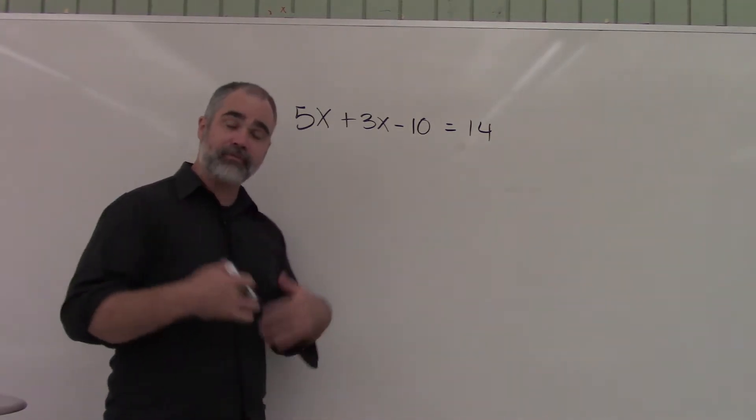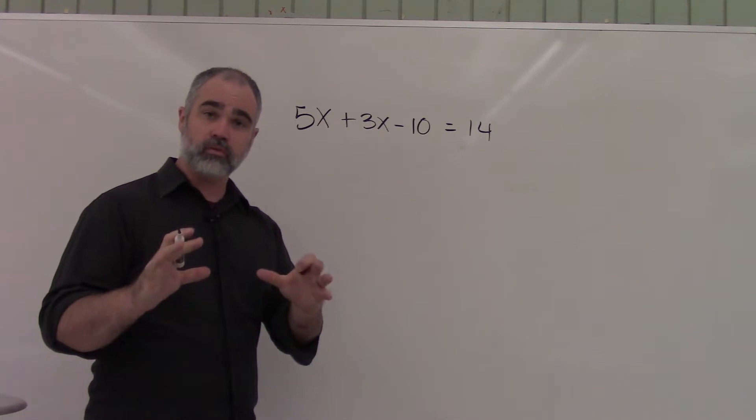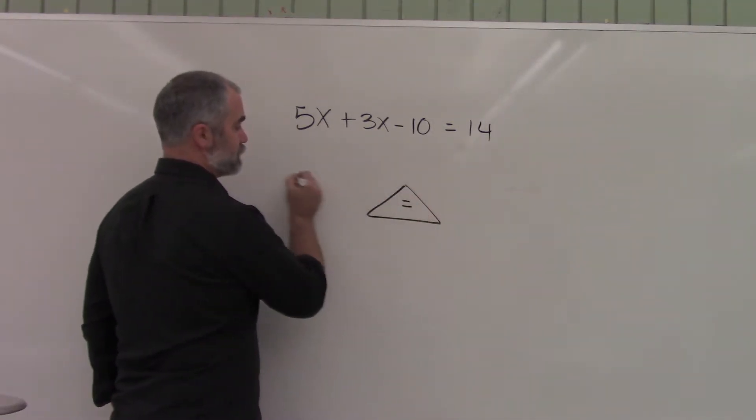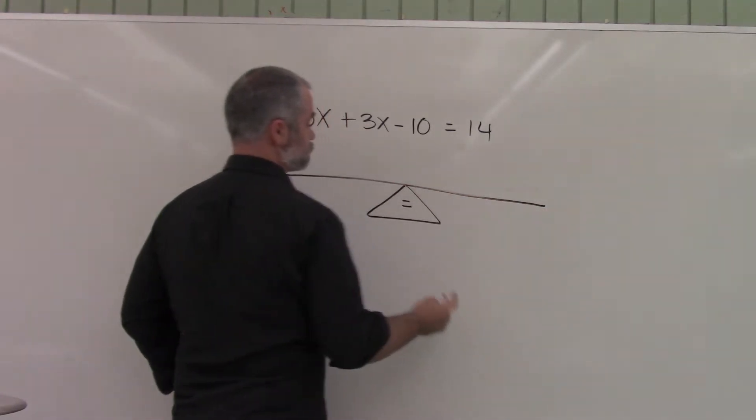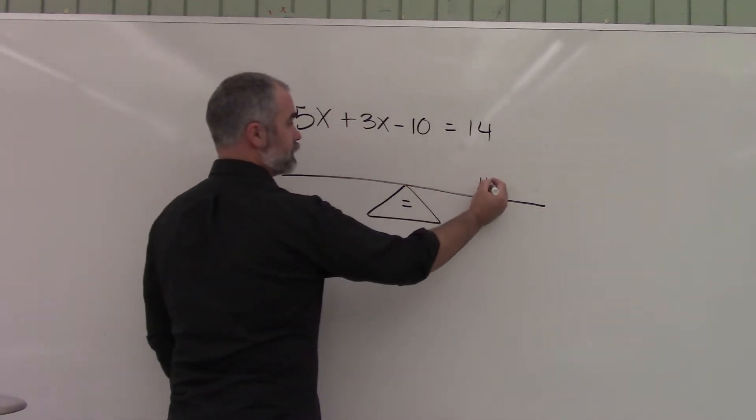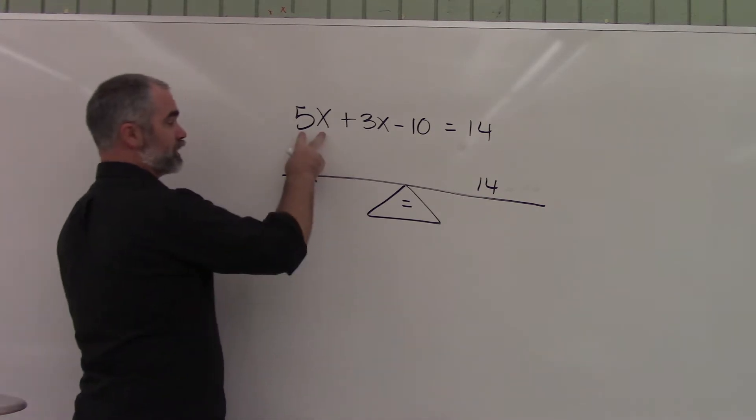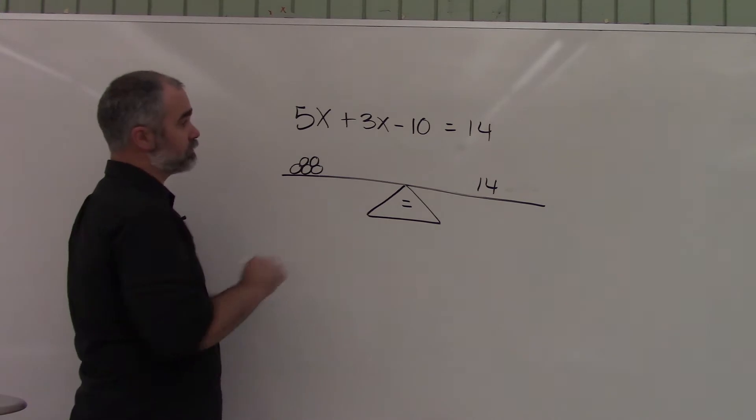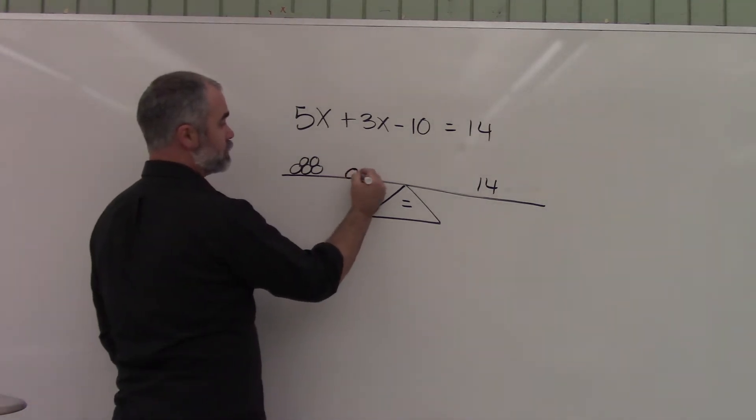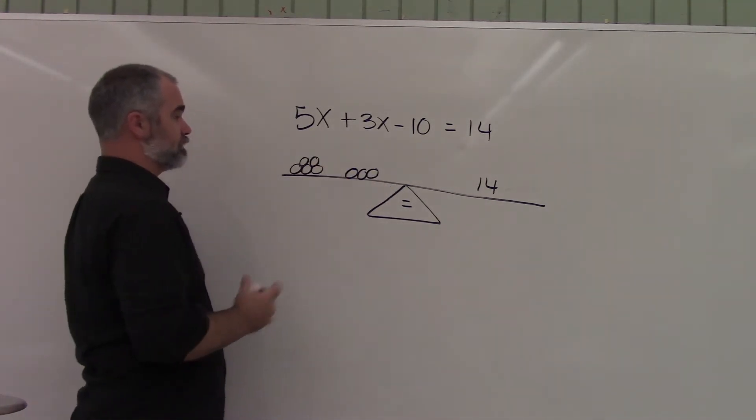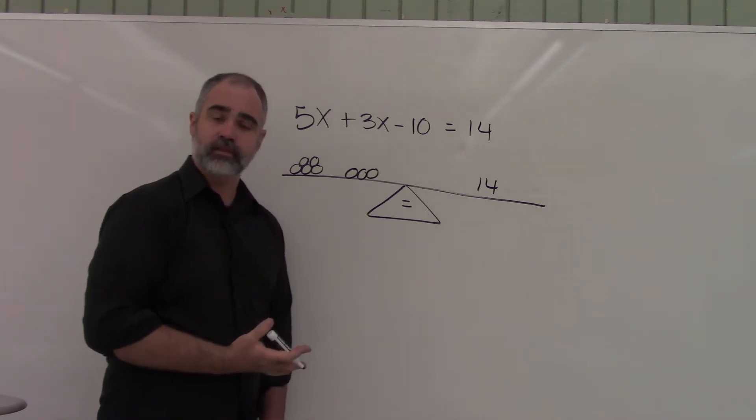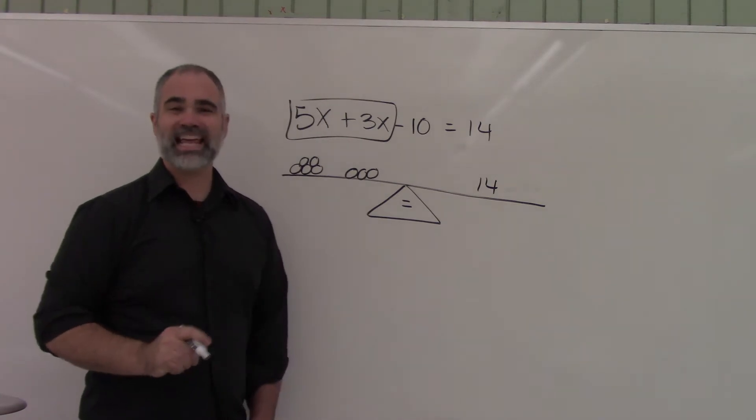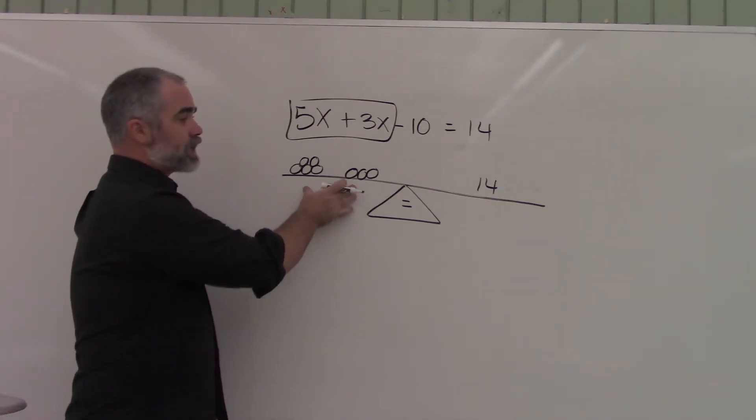The truth is, you can think about this like, remember from earlier in our episodes, we thought about this as a balance beam. Right, so I've got 14 things over here, but here I've got like 5 random bags of stuff. Here I've got 3 random bags of stuff. So how many bags of stuff do you actually have? I've got 8.